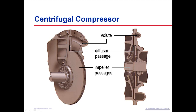Thus, the refrigerant's kinetic energy is converted to static energy or static pressure. Refrigerant, now at a higher pressure, collects in a larger space around the perimeter of the compressor called the volute. The volute also becomes larger as the refrigerant travels through it. Again, as the size of the volute increases, the kinetic energy is converted to static pressure. Due to its pressure and temperature, the refrigerant leaving the compressor is in a condition that allows its heat to be rejected from the chiller.